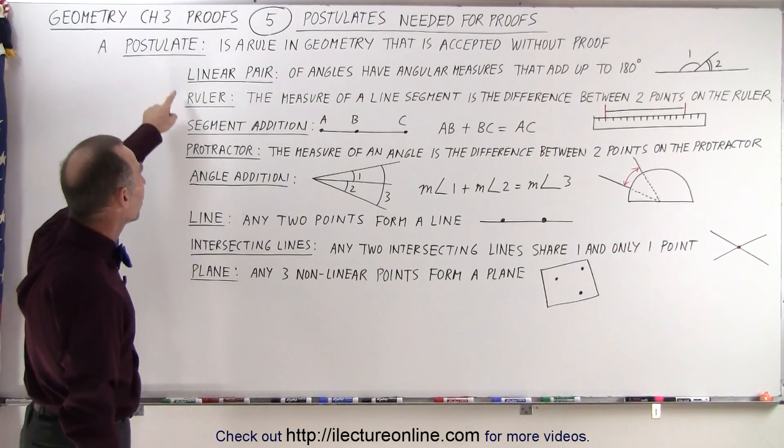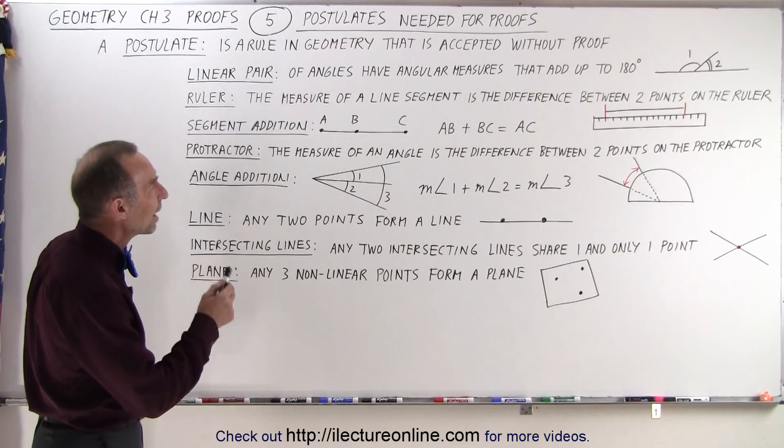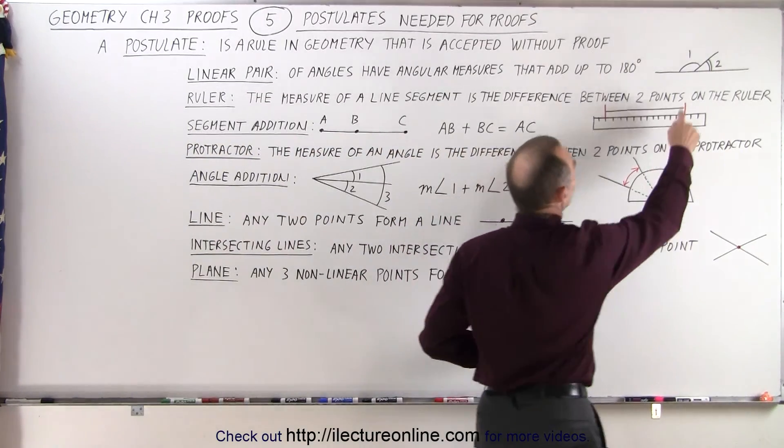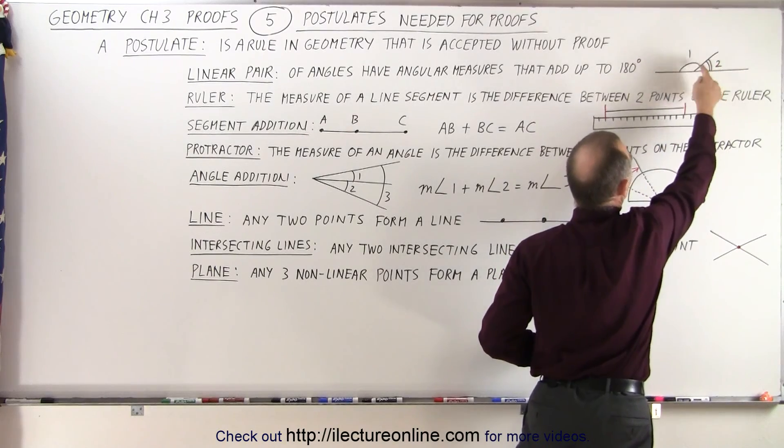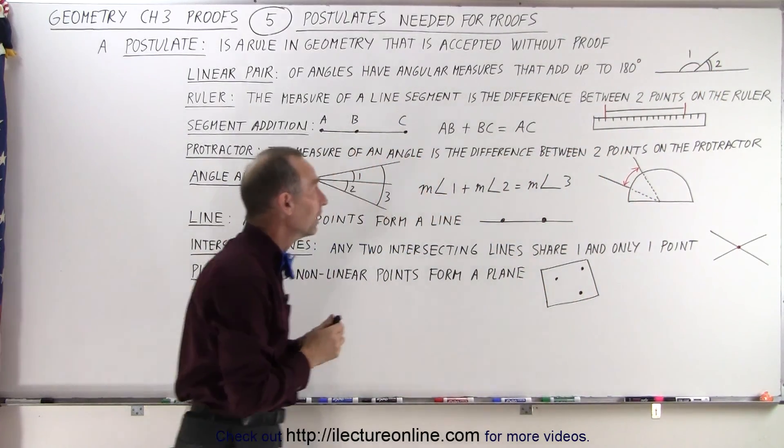For example, a linear pair, reference to angles, so a linear pair of angles have angular measures that add up to 180 degrees. Here are two angles, 1 and 2, and yes, indeed, when you take those measures and add them up, they add up to 180 degrees.